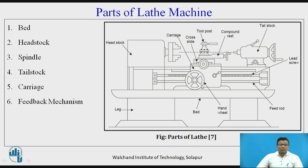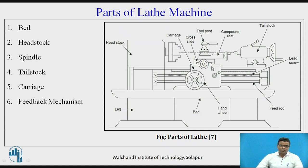Suppose you want to slide the carriage, you can use the hand wheel. This is the tailstock, which also consists of a hand wheel. Suppose you want to bring the dead center nearer to the workpiece, you can rotate the hand wheel. And suppose you want to move the whole assembly of the tailstock, you can slide it using the bed ways.